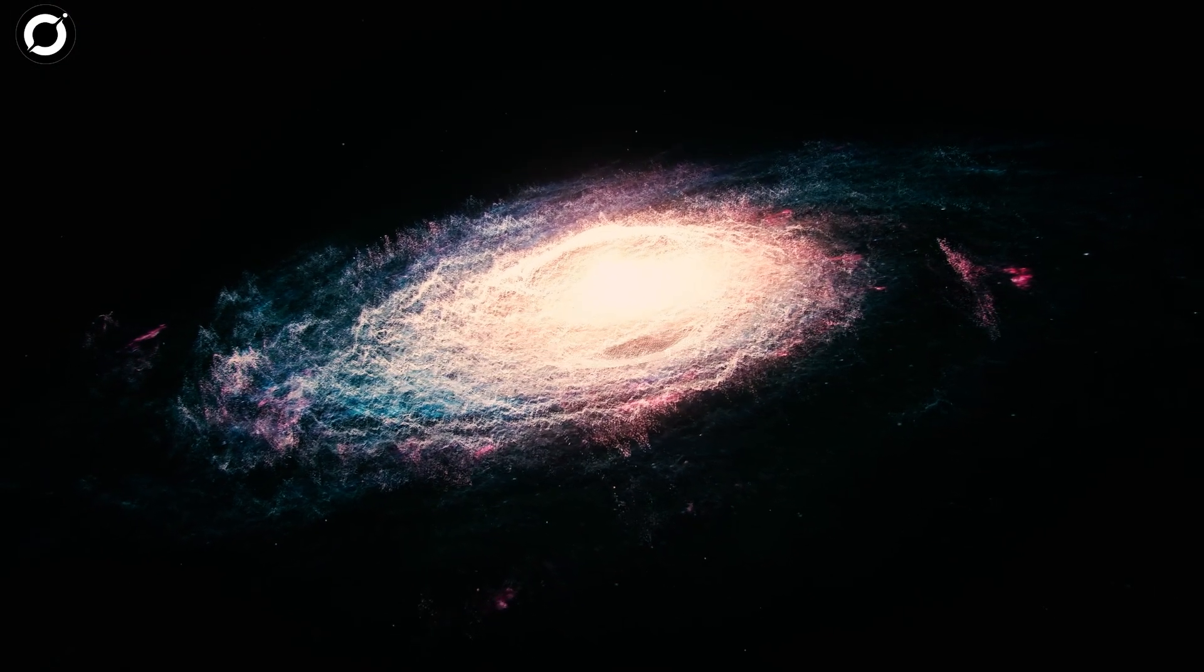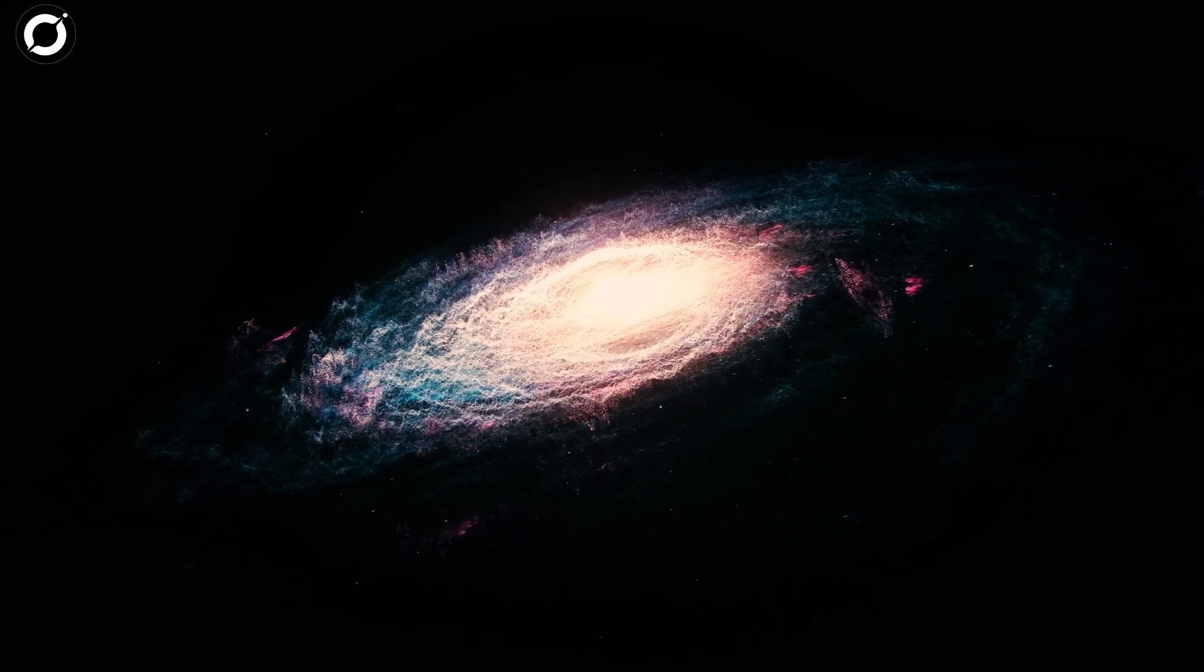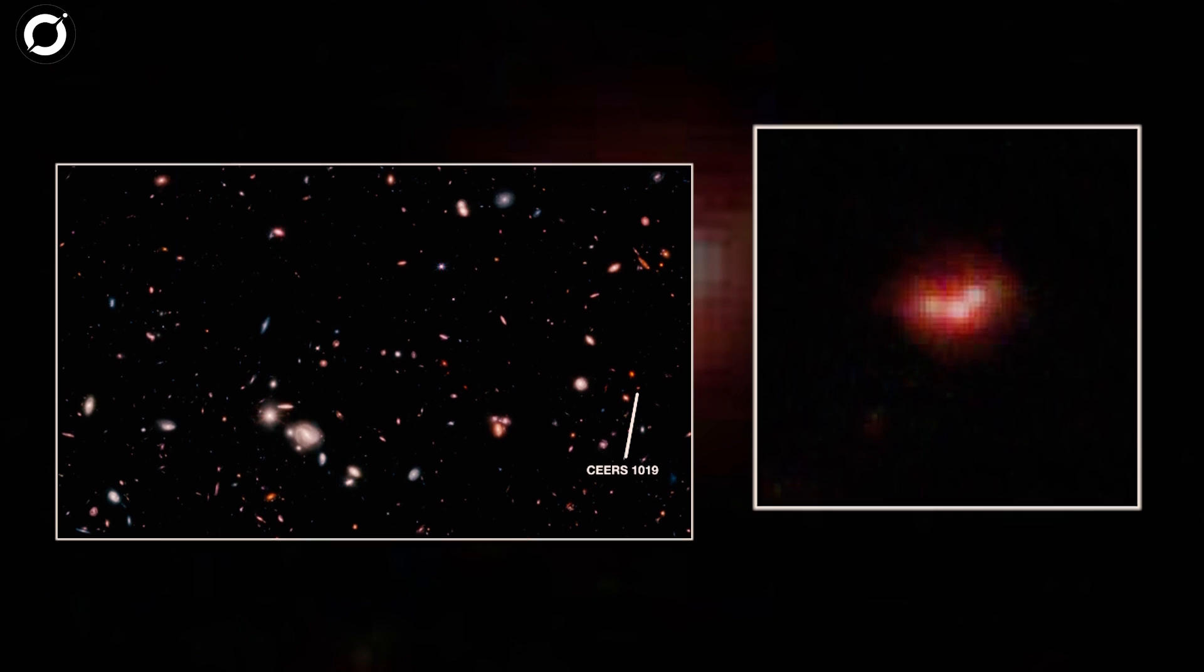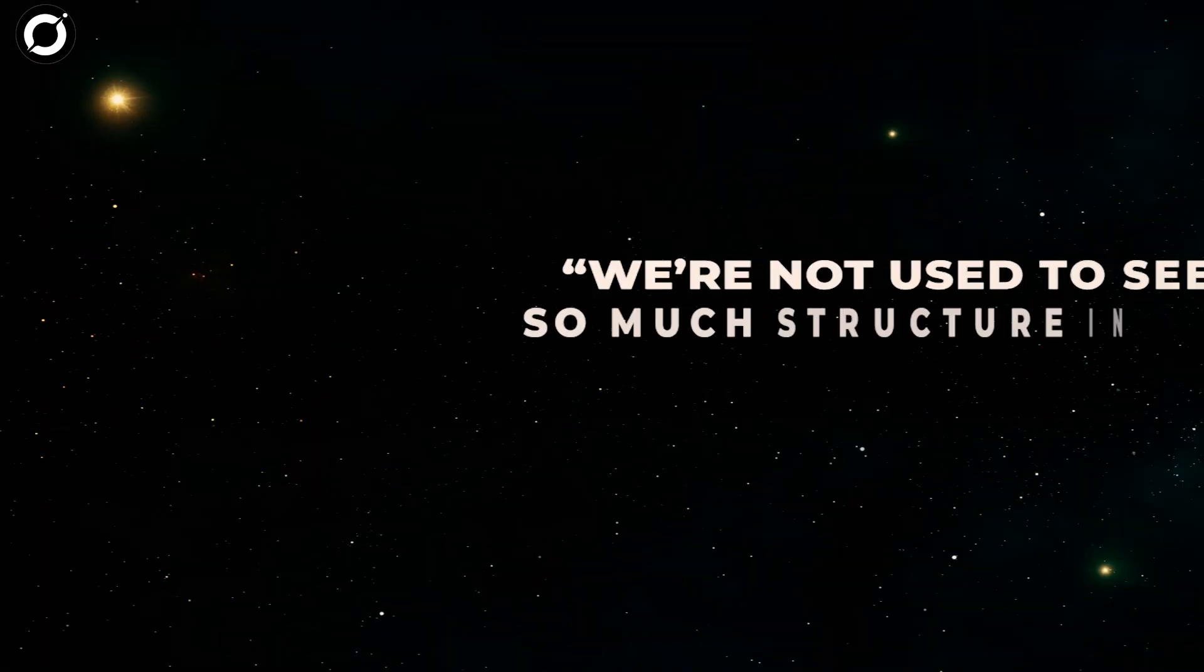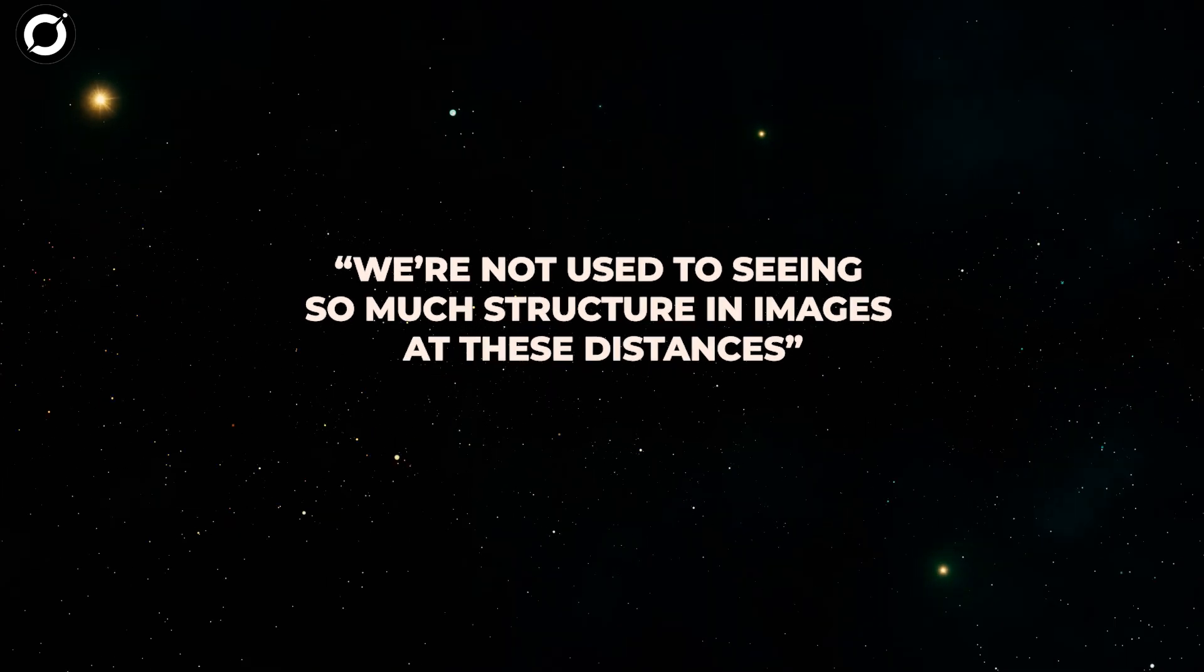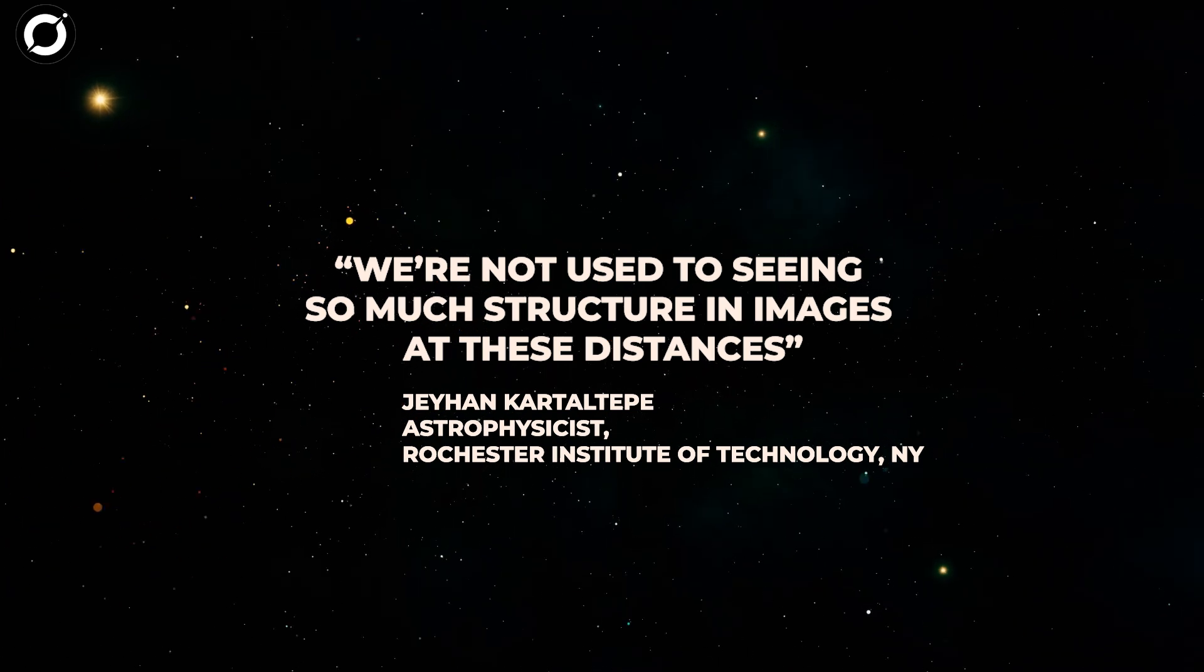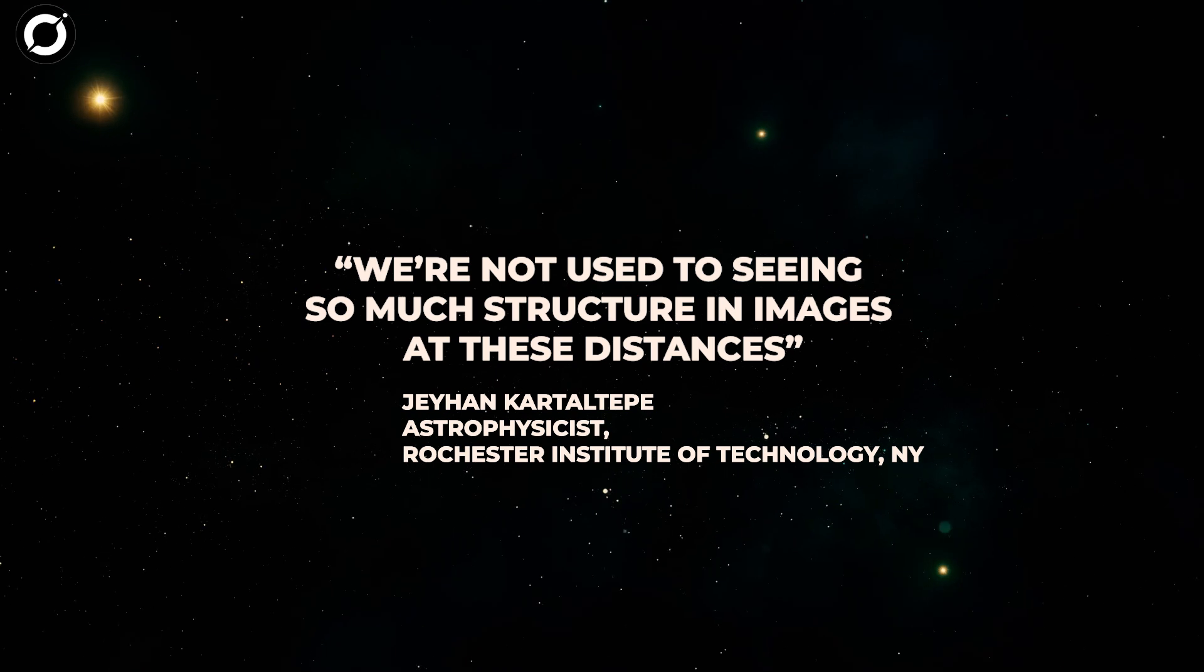It might not be just one galaxy. Most galaxies appear as a singular disk, not CEERS 1019. As the image shows, it's made up of three bright clumps. We're not used to seeing so much structure in images at these distances, said Jeyhan Kartaltepe, an astrophysicist at the Rochester Institute of Technology who worked on the research.